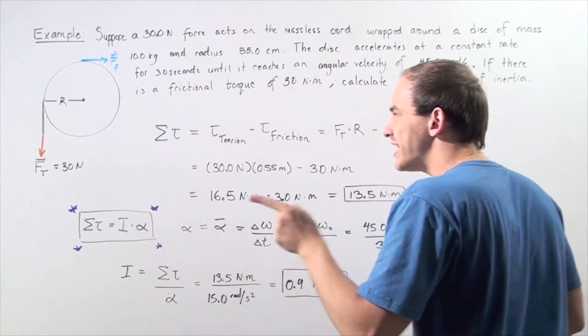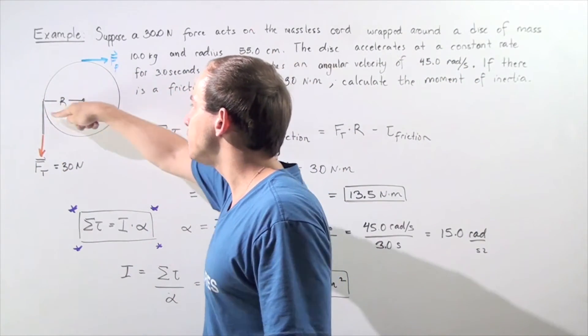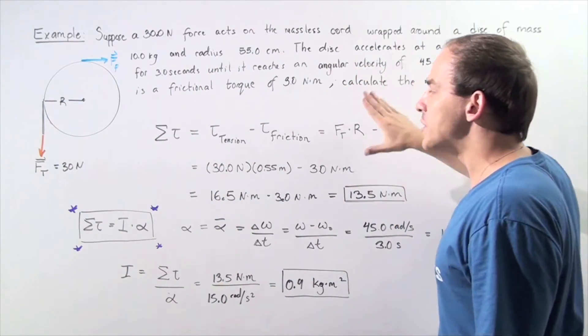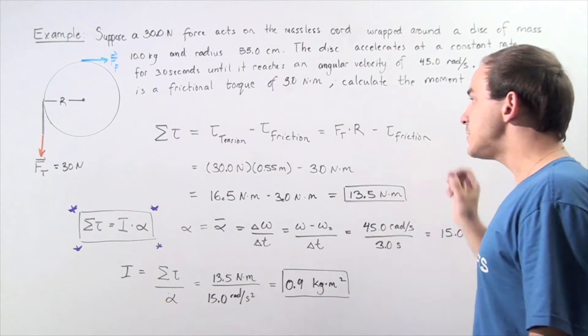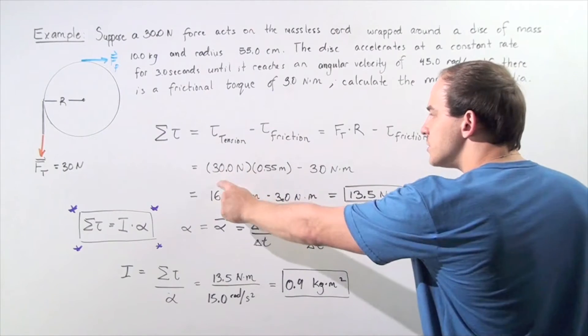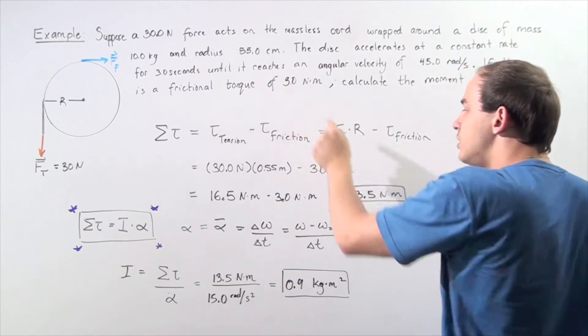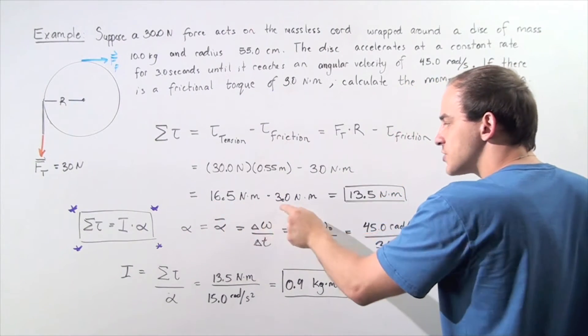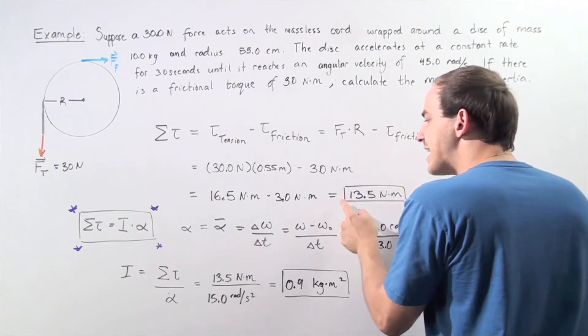The torque due to tension is the force acting perpendicular to the radius multiplied by the radius, which is the lever arm. The friction torque is given. So we have 30 Newtons times 0.55 meters minus 3 Newton-meters, which equals 16.5 minus 3, giving us 13.5 Newton-meters as our net torque.